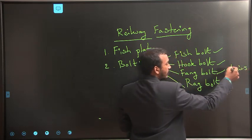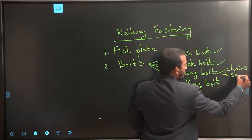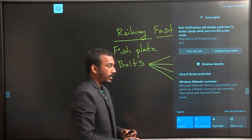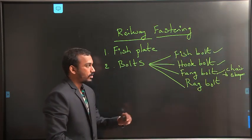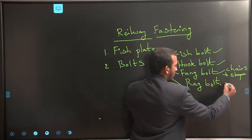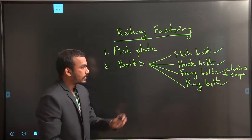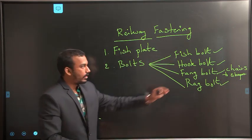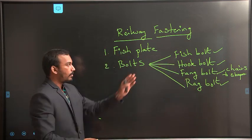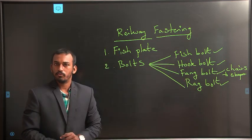Chairs are nothing but the arrangement to keep double-headed rails and bull-headed rails in position. Coming to the last one, rag bolts. Rag bolts are used to connect sleepers to the rails. These are the four types of bolts available, divided into four types based on their purpose.